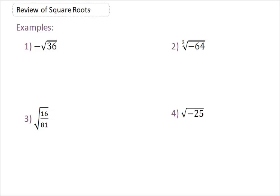Okay, example 1. We have negative the square root of 36. Well, the negative just carries over, and the square root of 36 is 6, because 6 times itself 2 times does give me 36.